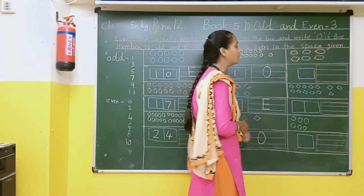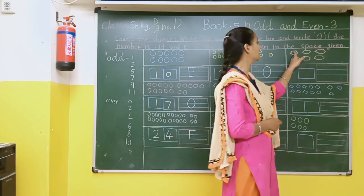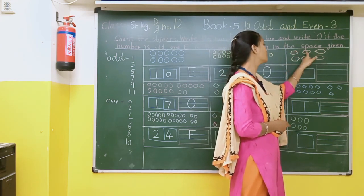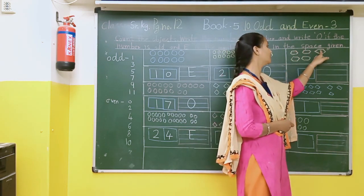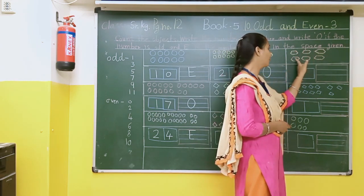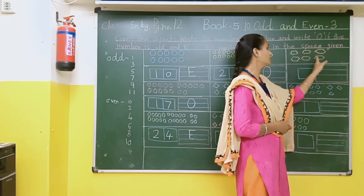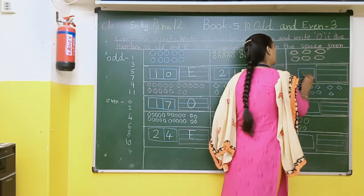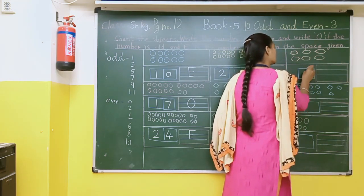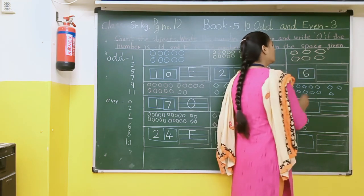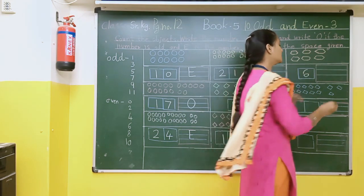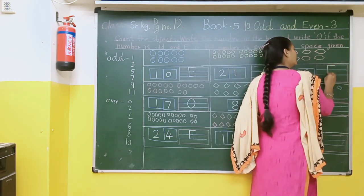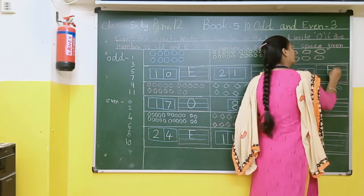Here the shapes are 1, 2, 3, 4, 5, 6. Here we will write 6. So 6 comes under even. So here we will write E.